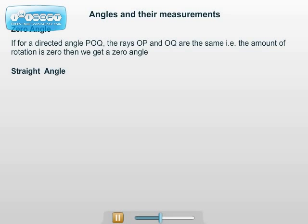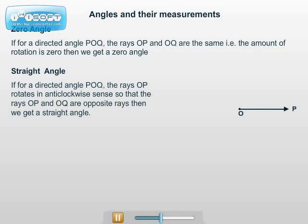Straight angle: If for a directed angle POQ, the initial arm (ray OP) and the terminal arm (ray OQ) are opposite rays, then we get a straight angle.